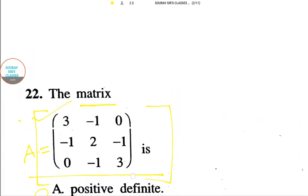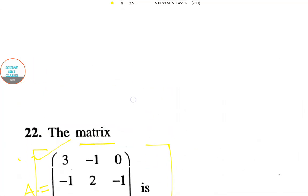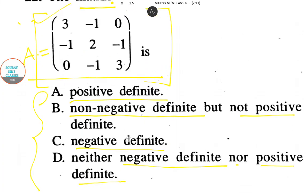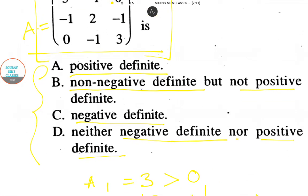Now all the principal minors are greater than 0, so matrix A is a positive definite matrix. Therefore, the answer is option A.